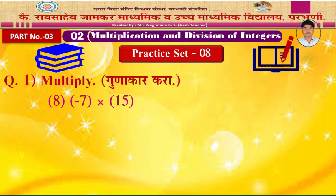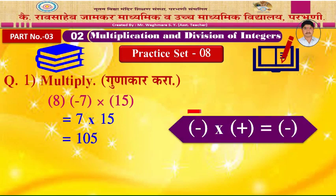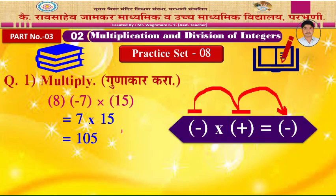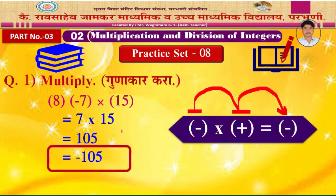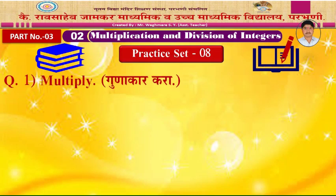Example 8: Minus 7 into 15. You may multiply without thinking about the sign — 7 into 15 is 105. But remember the rule: one is positive and one is negative. When one is positive and one is negative, the product is negative. So write the sign in the answer: negative 105.